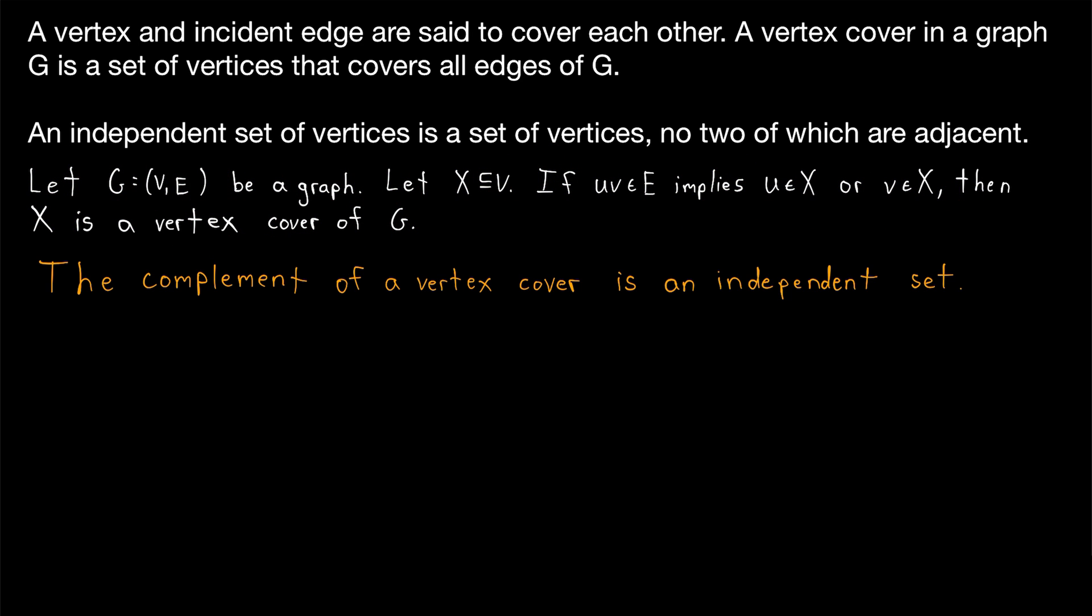To be a vertex cover means that every edge uv will have at least one of its end vertices in the cover. Thus, if we take the complement of that, there's no edge who will have both endpoints in the complement, and so there's not going to be any pair of adjacent vertices in the complement, and so it will be an independent set.